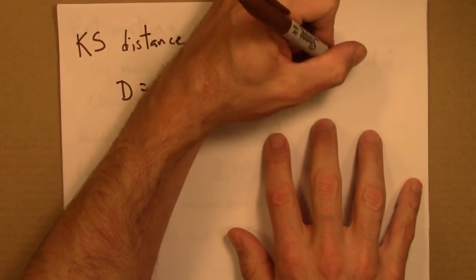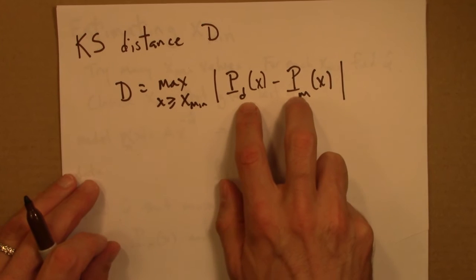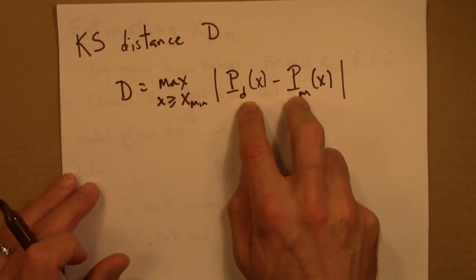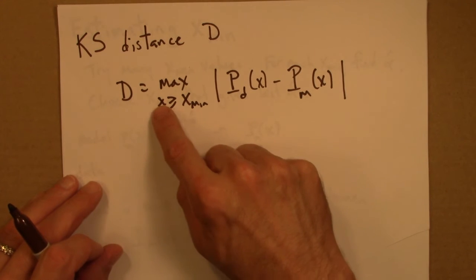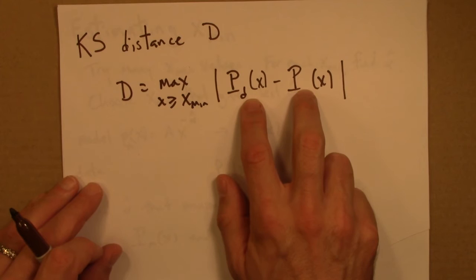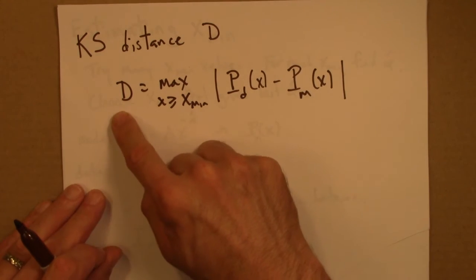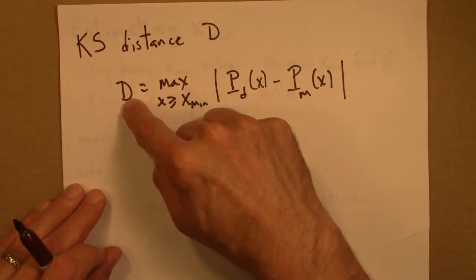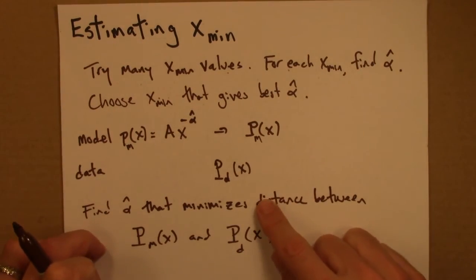So the KS distance, Kolmogorov-Smirnov, is the maximum for all x greater than or equal to xmin. So you just look to see where the cumulative probability distributions are, where they're the most different. So for all the x values greater than or equal to xmin, you say, how different are these two cumulative distributions? The largest of these differences is the Kolmogorov-Smirnov distance D.